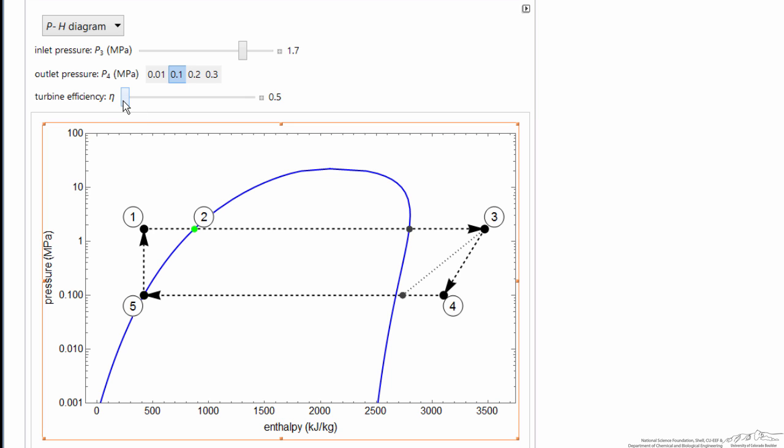And then we can change the efficiency. So this is efficiency relative to reversible process. So this dotted line starting at point three corresponds to reversible. So if I make the efficiency point nine five, then we're close to reversible. That's the fraction of the reversible efficiency, how close we can approach reversible process. So if I lower the efficiency, then we're going to get less work out of this turbine.